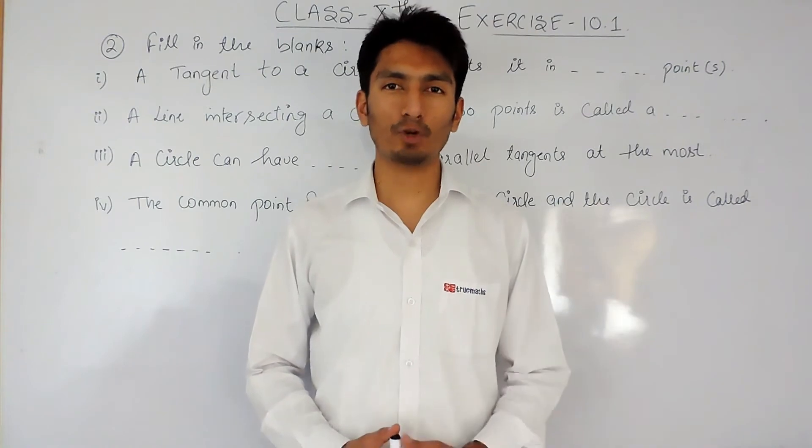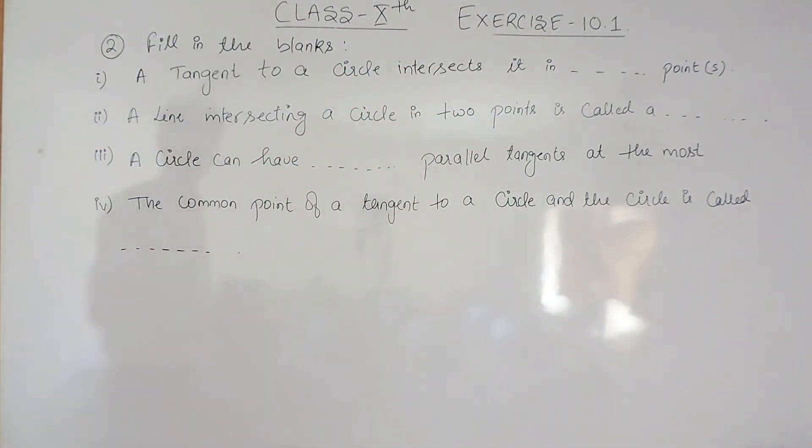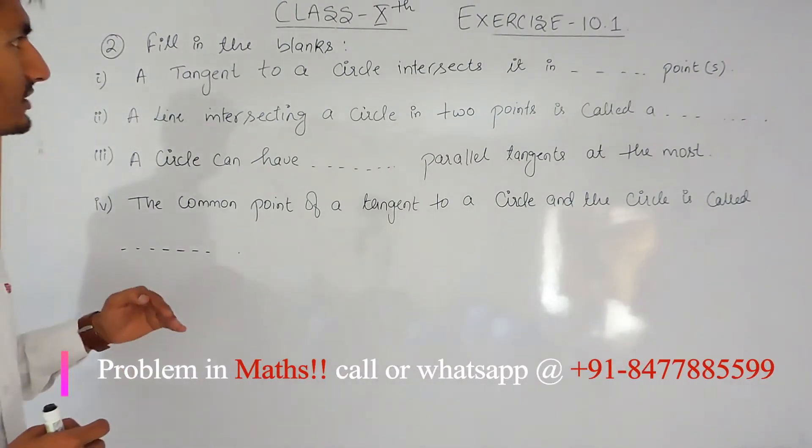Hello everyone, we are from True Maths. In this video, we are going to solve question number 2 of exercise 10.1. We have to fill in the blanks, and there are four parts here. The first part says: a tangent to a circle intersects it in _____ point(s).